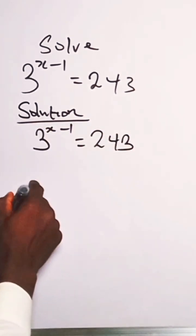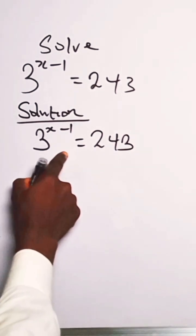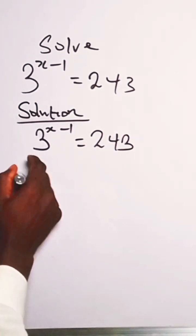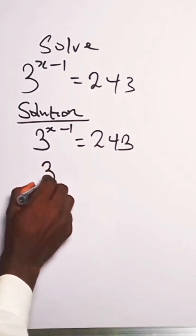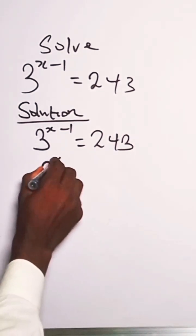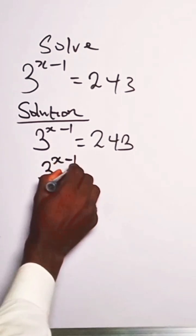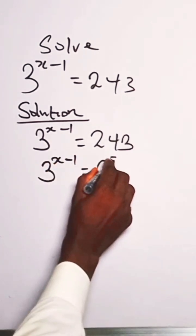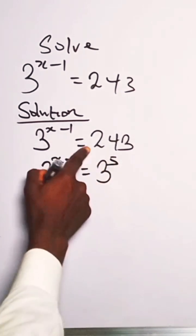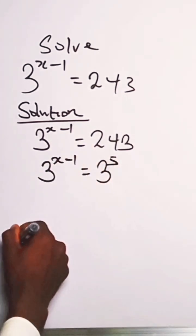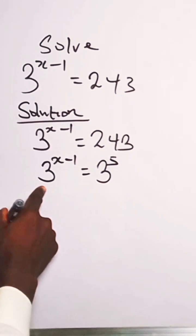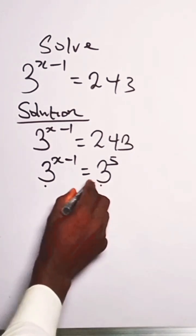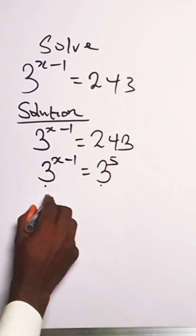We can write 243 in index form. So we have 3 raised to the power x minus 1 equals 3 raised to the power 5, which represents 243. So we have the same base, and we equate the exponents.